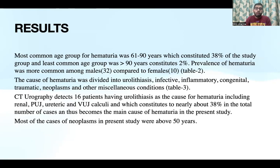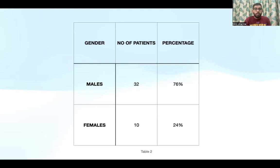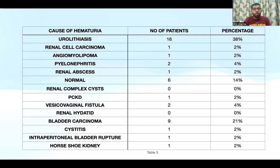The most common age group for hematuria was 61 to 90 years, constituting 38% of the study group, while the least common was above 90 years at just 2%. Prevalence was more common among males compared to females. The cause of hematuria was divided into urolithiasis, infective, inflammatory, congenital, traumatic, neoplasms, and miscellaneous conditions. CT urography detected 16 patients with urolithiasis as the cause, including renal, PUJ, ureteric, and VUJ calculi, constituting nearly 38% of total cases. Most neoplasm cases were above 50 years. Males were more commonly affected, with the most common cause being urolithiasis, followed by bladder carcinoma.